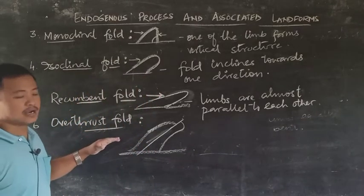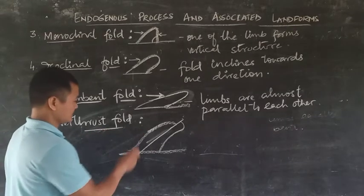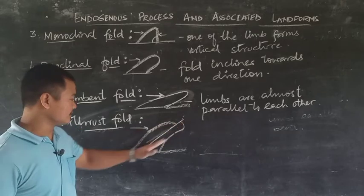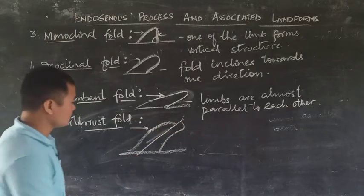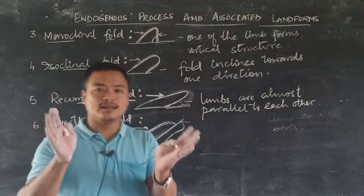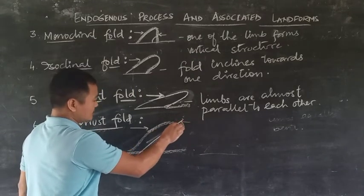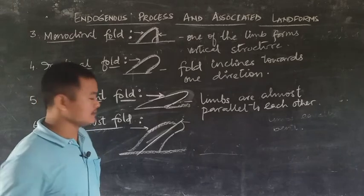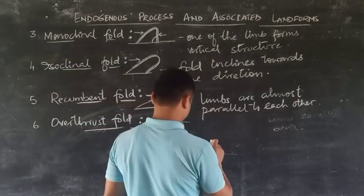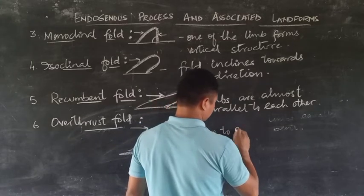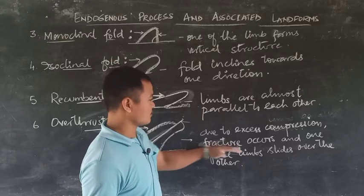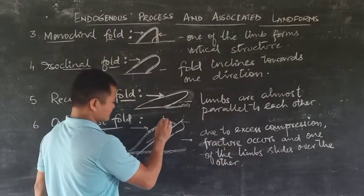The next type is the overthrust fold. With further application of compression force, the limbs or fold develop a crack, known as a fracture, forming a fault called the overthrust plane. One of the limbs is completely over the other, resulting in a fault. It appears as if one fold remains over the other. Due to excess compression, the fracture occurs and one limb slides over the other — this is the overthrust fold.